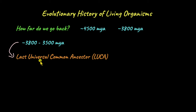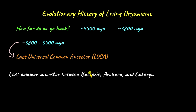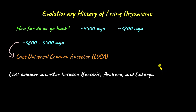I like to start the evolutionary history of living organisms from about 3,800 to 3,500 million years ago, because it is during this time there was something known as the Last Universal Common Ancestor, or LUCA. LUCA is believed to be the last universal common ancestor between the three domains of life: Bacteria, Archaea, and Eukarya. From this ancestor, one lineage evolved as Bacteria, another as Archaea, and another as Eukarya.